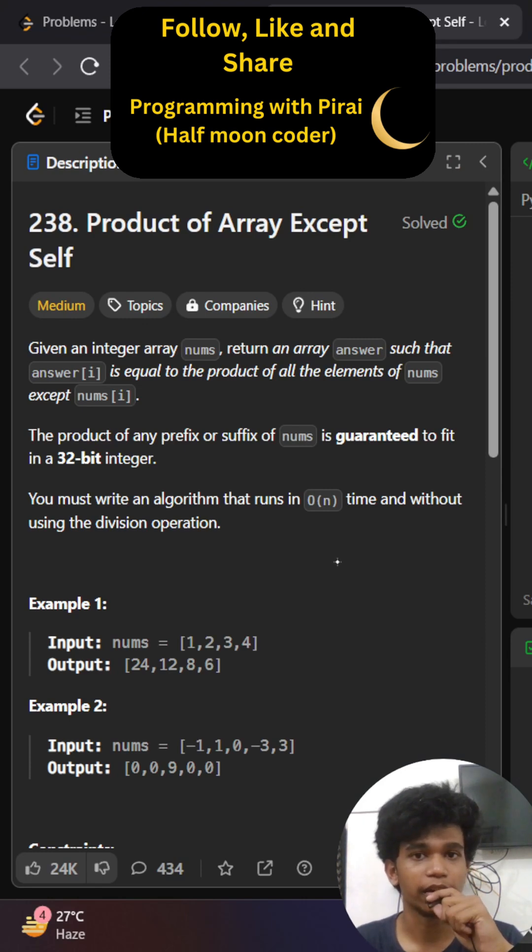Let us see a question that is asked in FAANG and also Adobe. It is LeetCode question number 238, product of array except self.